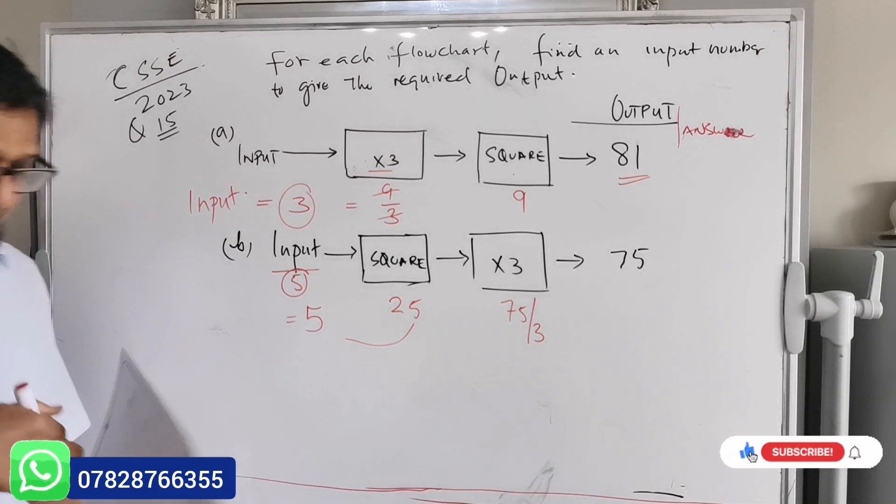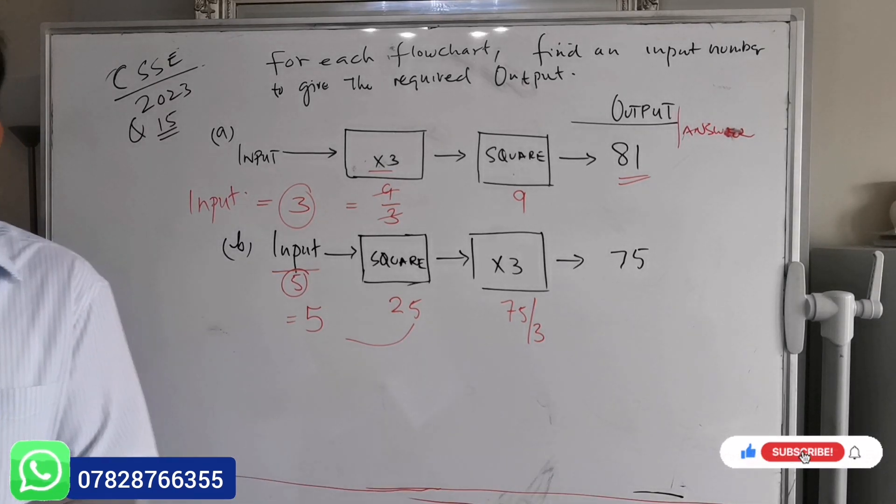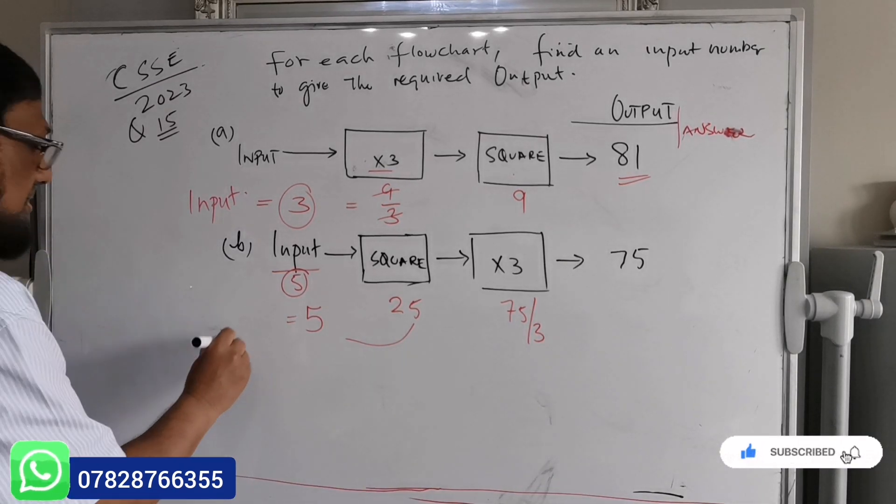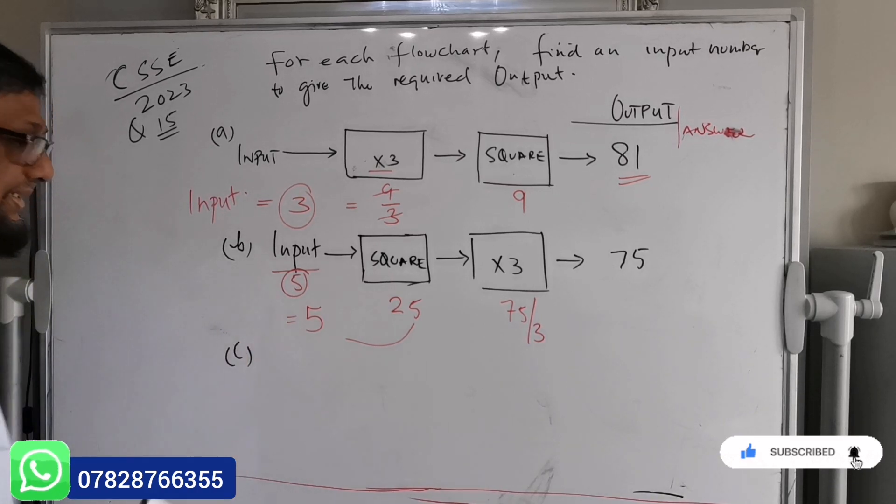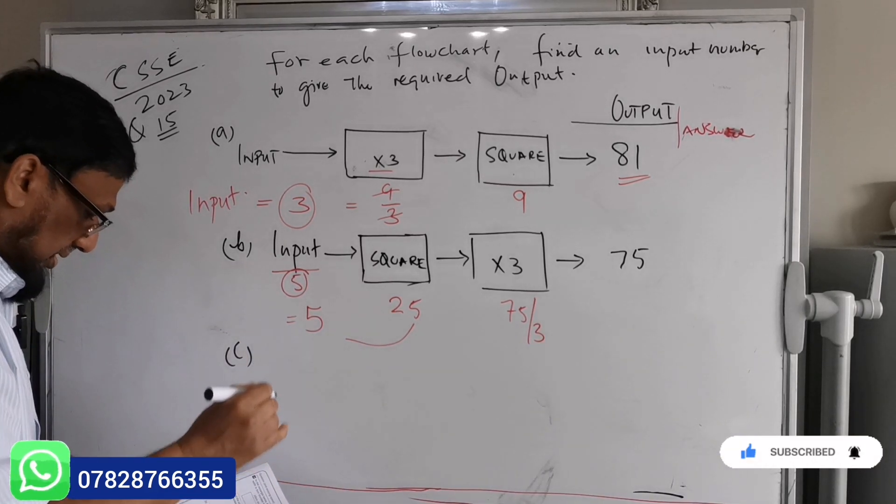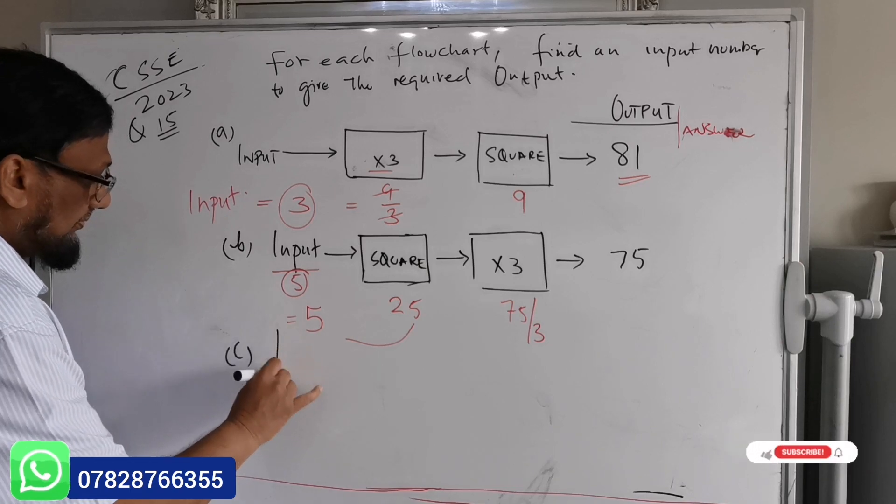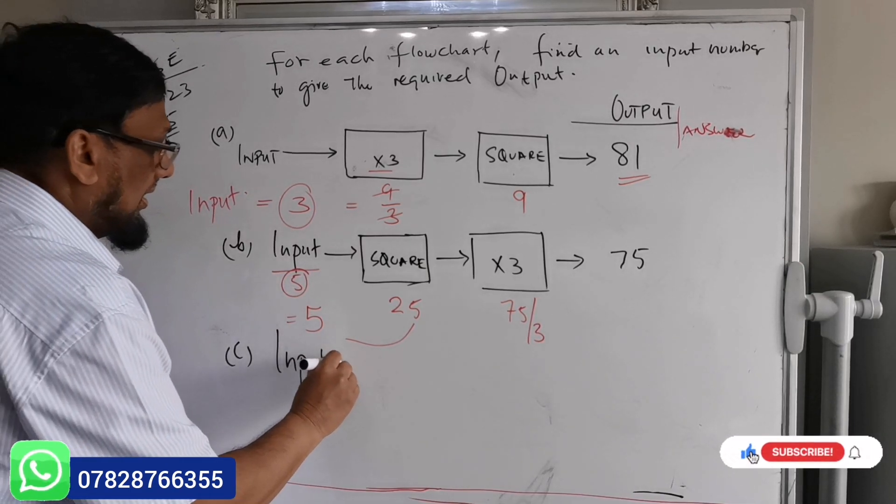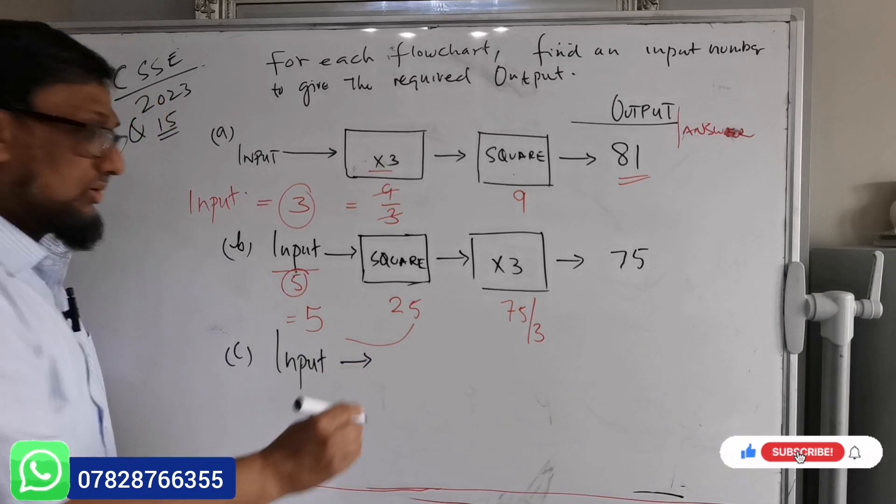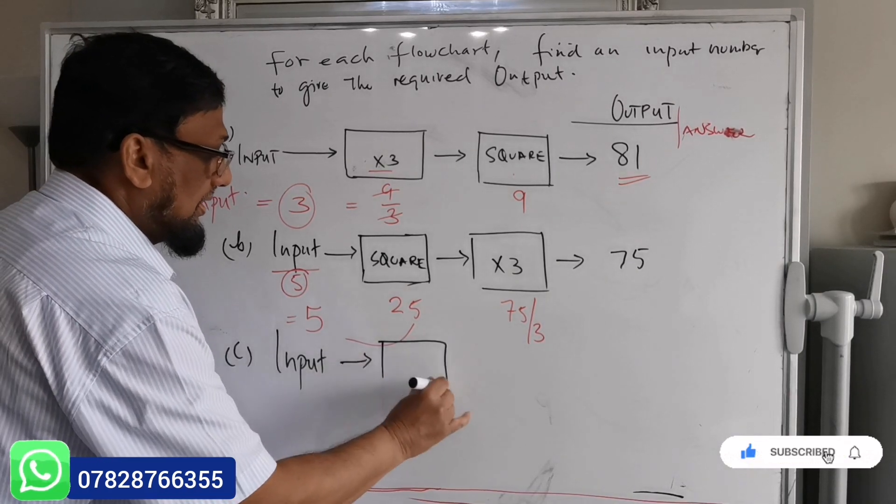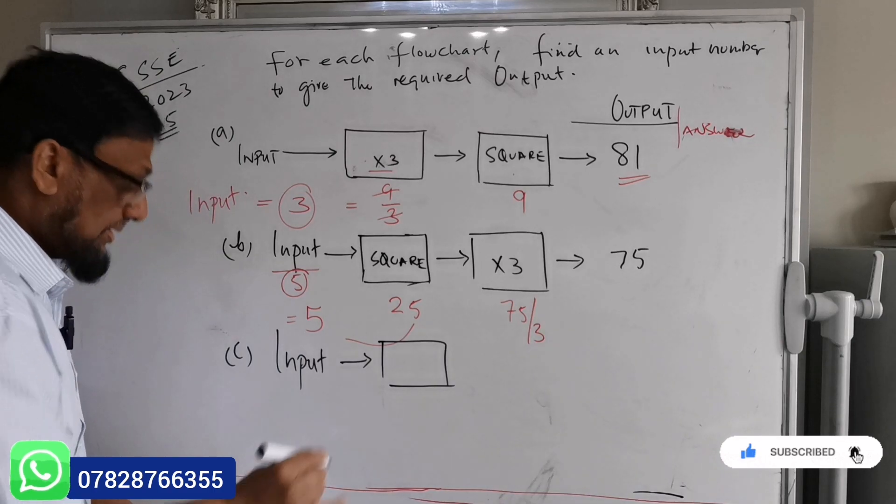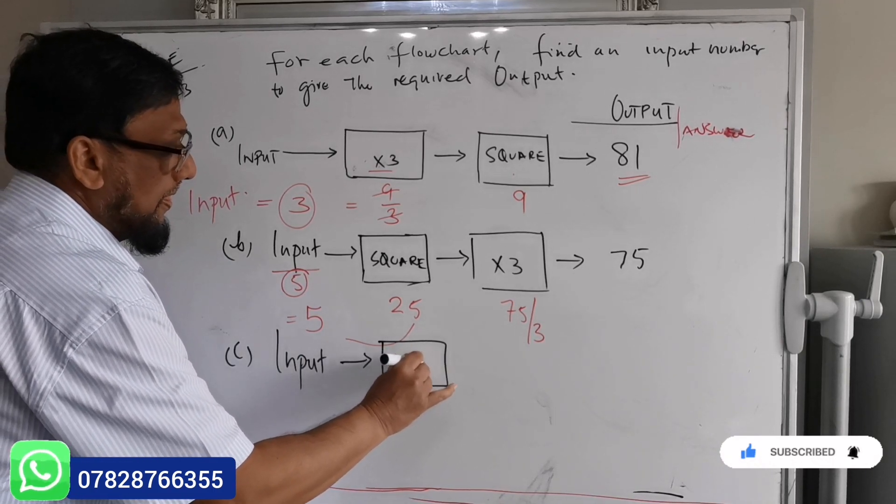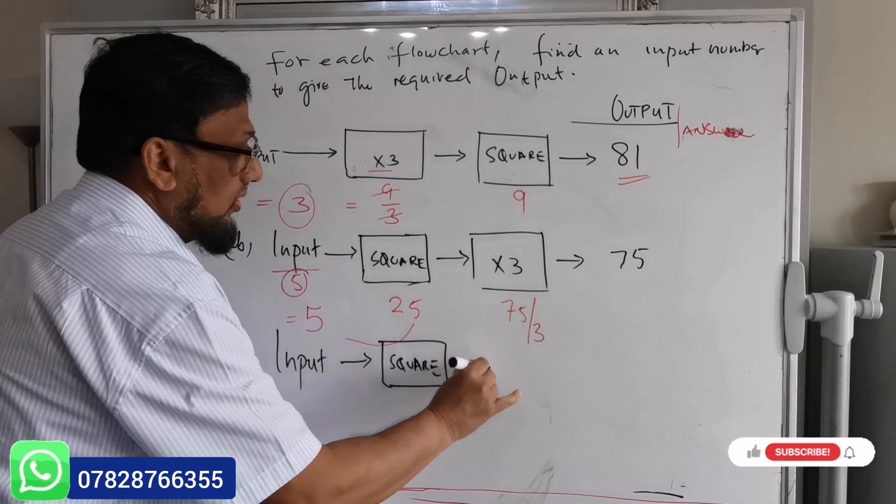Go for the part C. Very simple, very easy questions. It says input, then arrow, this is what she says, it says square.